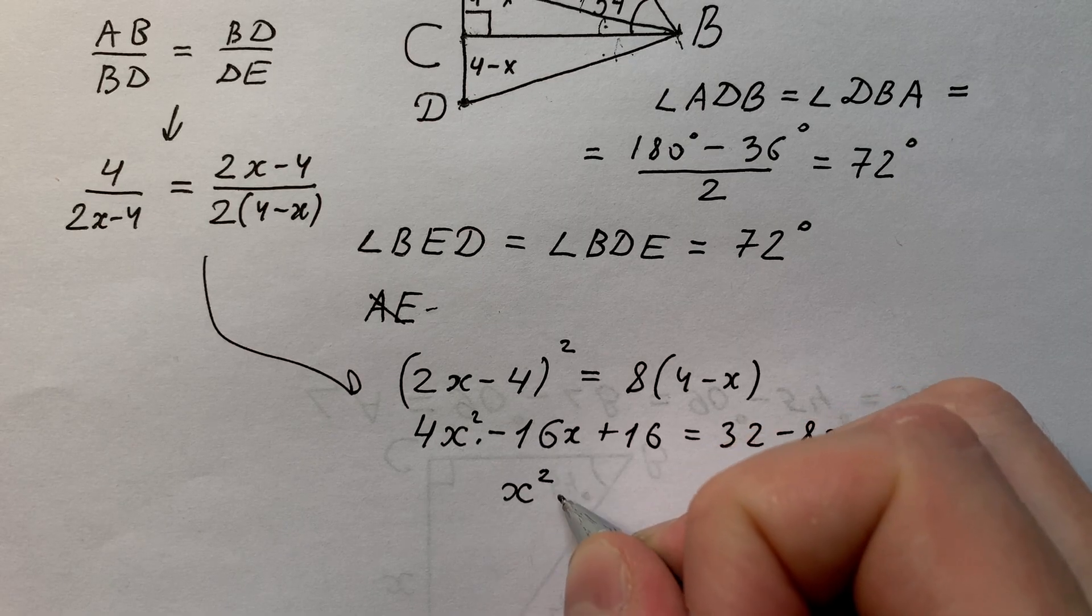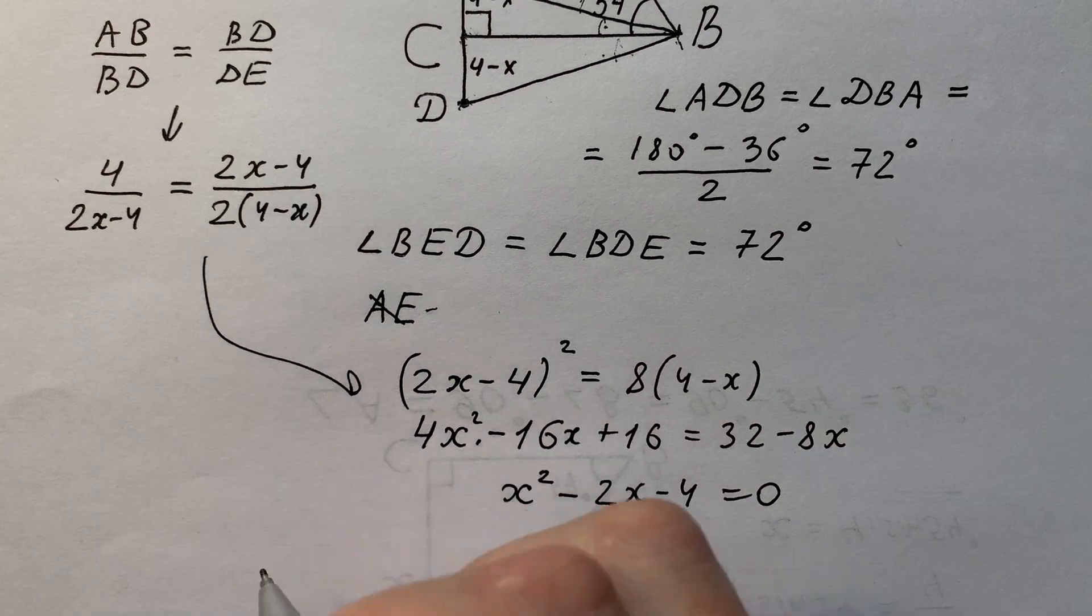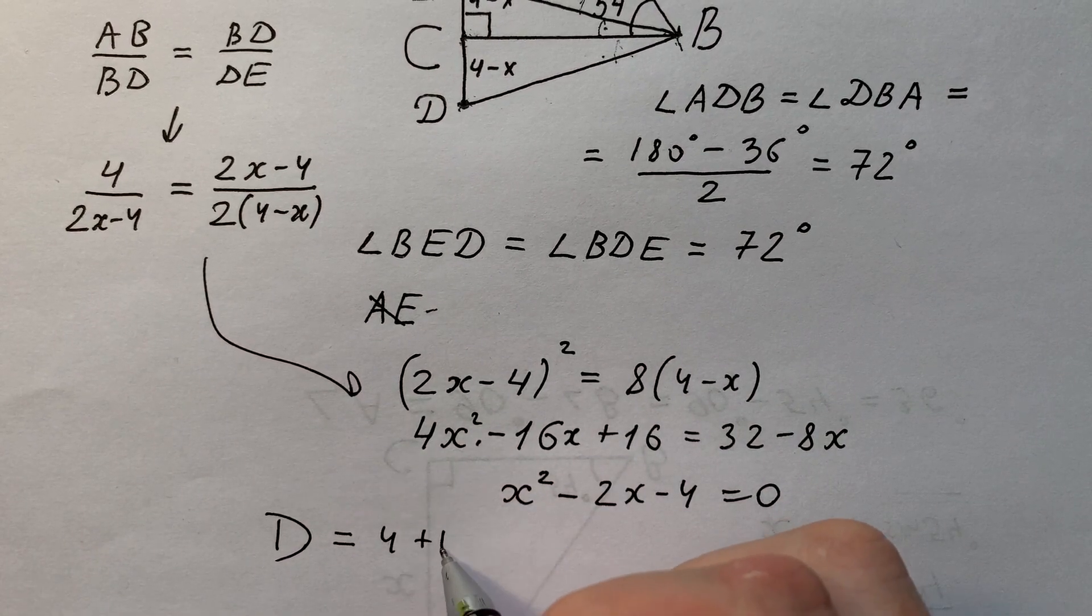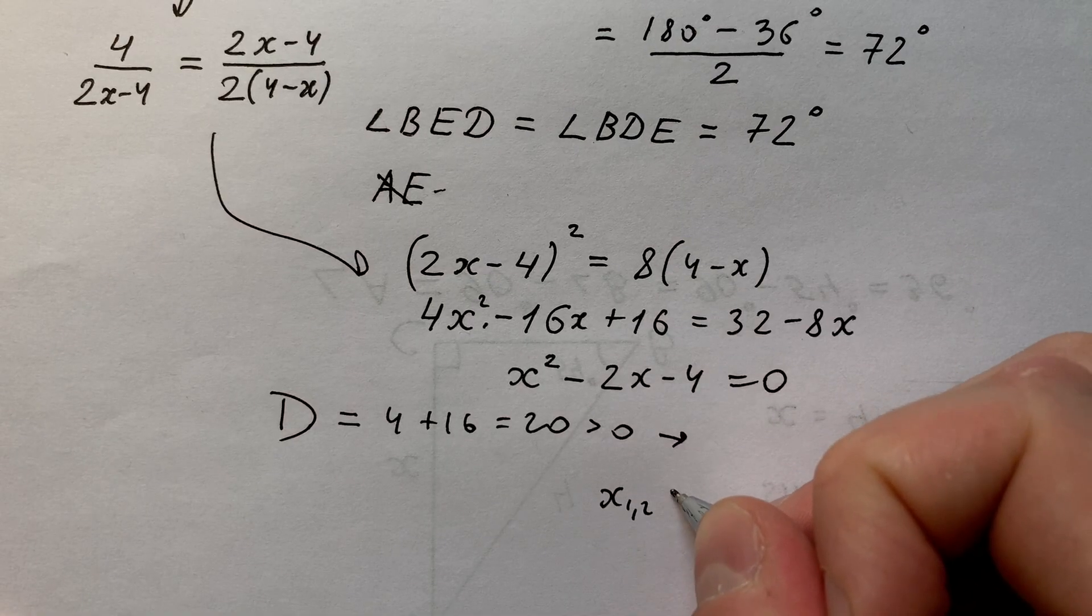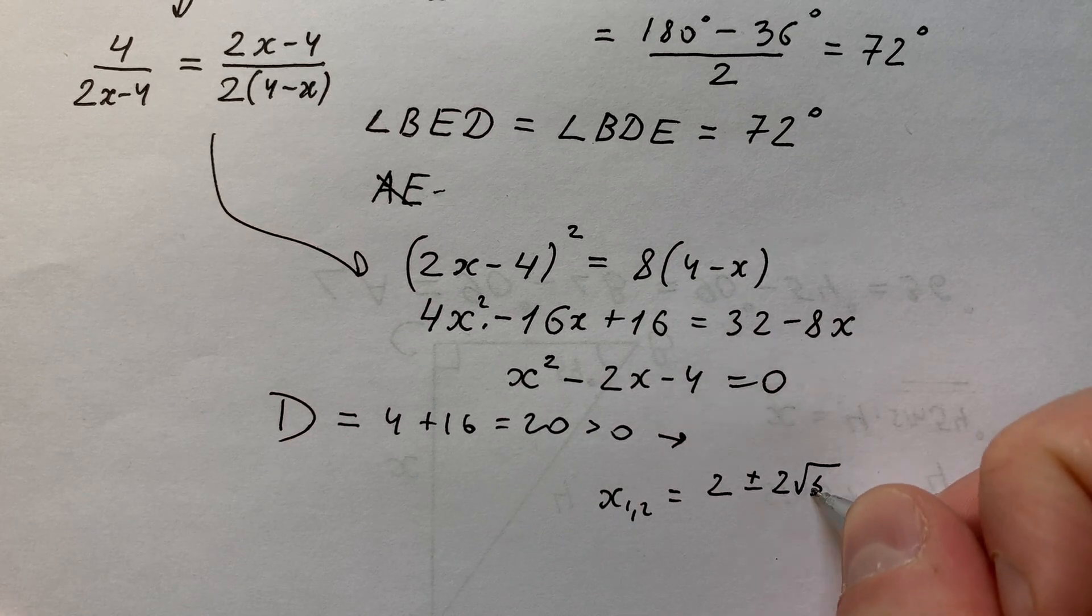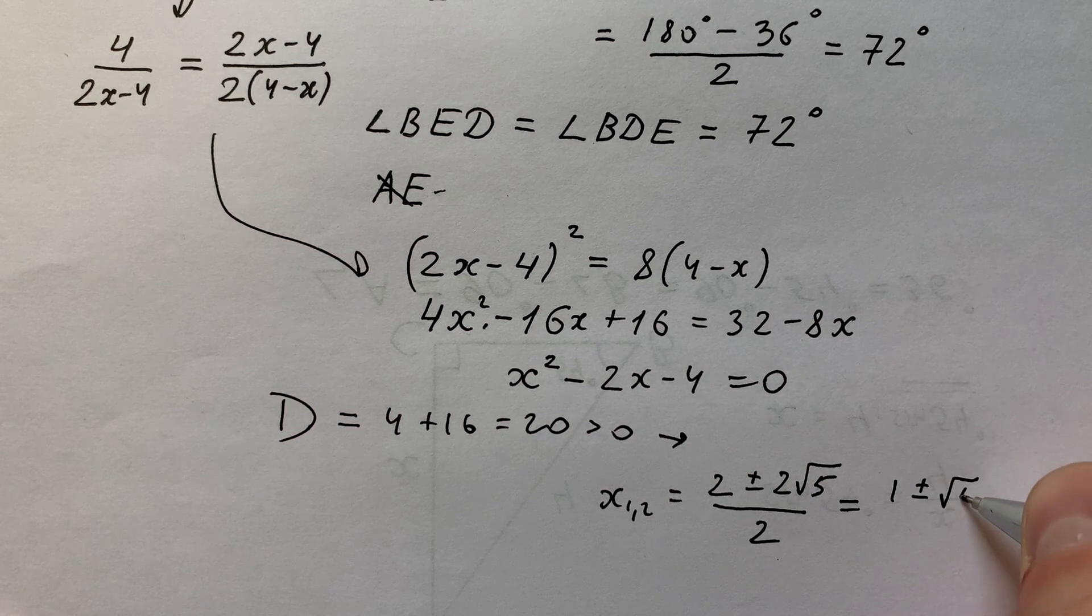Or we can write like x² minus 2x minus 4 equals 0. The discriminant of this quadratic equation equals 4 plus 16 equals 20, which is bigger than 0. That's why x₁ and x₂ equals 2 plus or minus 2√5 divided by 2, or 1 plus or minus √5.